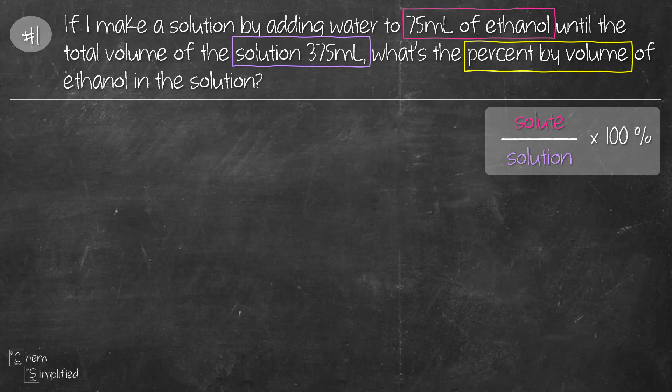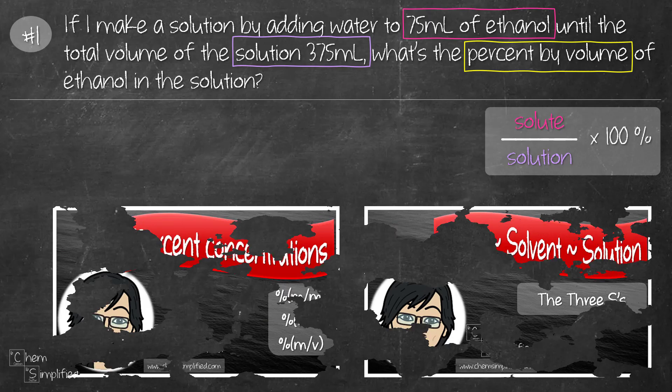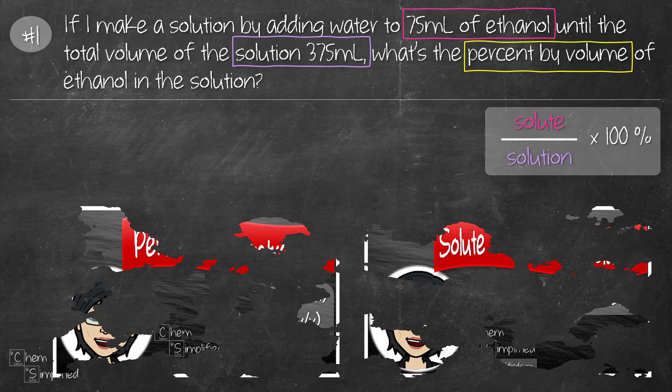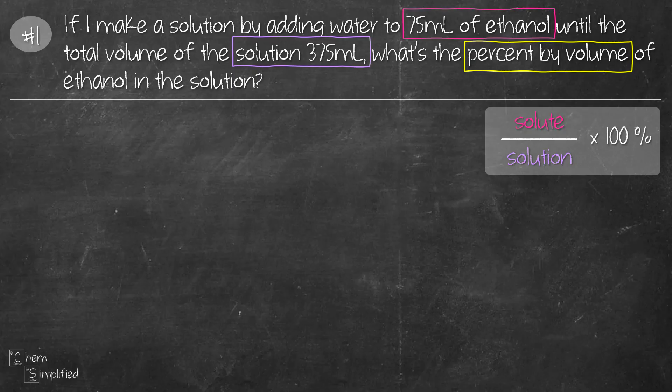In the question, ethanol is the solute since 75 is smaller than 375. Depending on what the question wants, you use either the mass or volume in the equation. I have intro videos for this. I'll place the links at the end. This question is straightforward since it tells us it wants the percent by volume. That means we'll place the volume of solute on top and volume of solution at the bottom times 100 percent. So we take 75 divided by 375 times 100 and that gives us 20 percent. That's the percent volume.